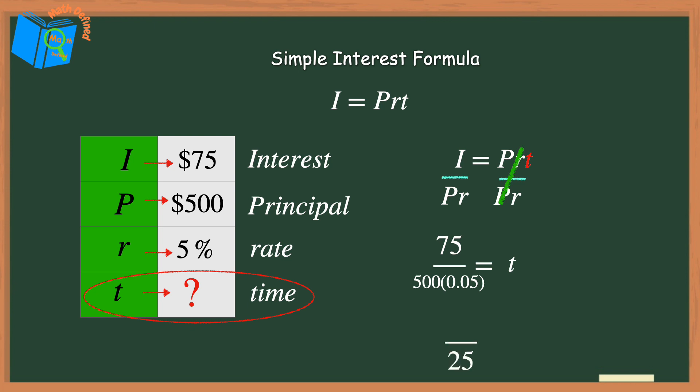And I'll bring down the rest of the equation. Then we divide 75 by 25 to get 3. So t equals 3, or it took 3 years to earn $75 in interest in the savings account.